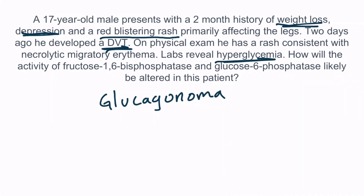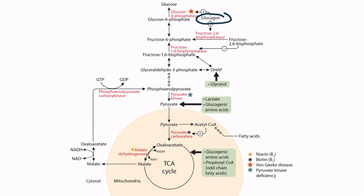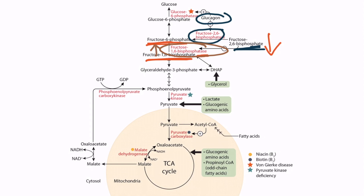Let's pull up the overview figure to answer this question. Glucagon decreases the concentration of fructose-2,6-bisphosphate by increasing the activity of this enzyme here. Because fructose-2,6-bisphosphate normally inhibits fructose-1,6-bisphosphatase, its activity is increased, resulting in increased conversion of fructose-1,6-bisphosphate to fructose-6-phosphate. You can also see that glucagon increases the activity of glucose-6-phosphatase. This patient had hyperglycemia, which should make sense — the liver is working in overdrive to produce glucose, even though this is unnecessary, and the excessive activation of gluconeogenesis results in hyperglycemia.